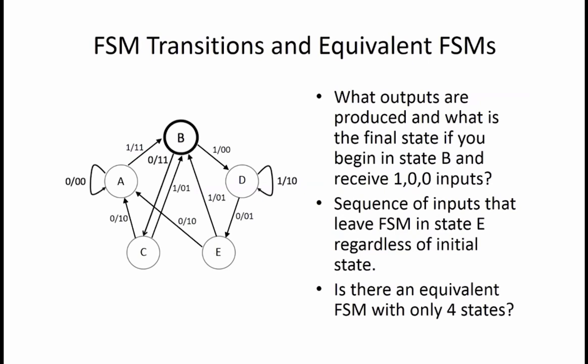Taking a closer look at the states in this FSM, we see that both states C and E transition to state B on a 1 input and produce a 0, 1 output. On a 0 input, they both transition to state A and produce a 1, 0 output. So states C and E are equivalent and can be merged into a single state, thus reducing the total number of states in our FSM to four.